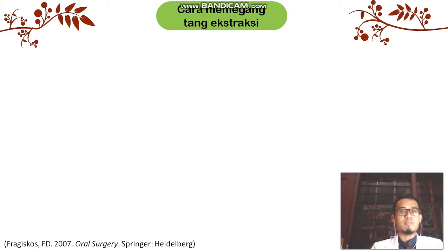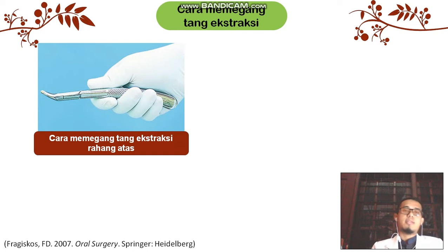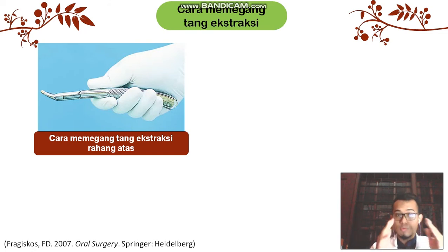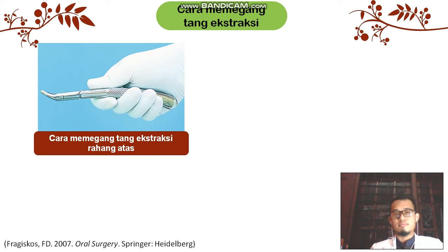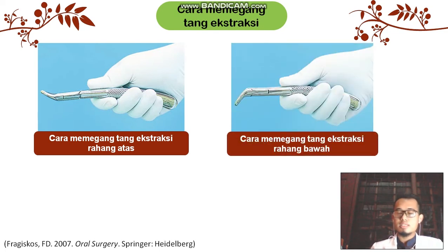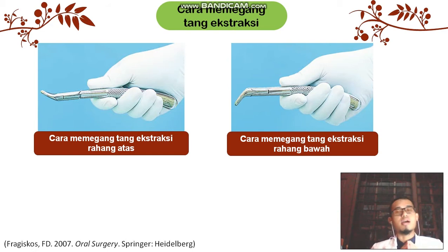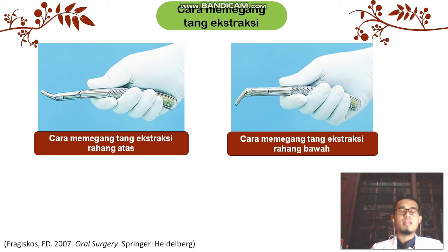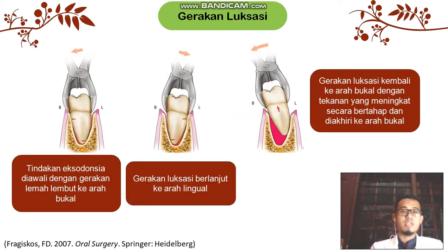Cara memegang tang ekstraksi menjadi sangat penting untuk mencapai ergonomis pada lengan. Cara memegang tang ekstraksi rahang atas adalah pump up, dengan posisi ibu jari di antara kedua lengan tang, sementara jari-jari lainnya memegang di salah satu sisi lengan tang ekstraksi. Pada rahang bawah, ibu jari berada di antara kedua lengan tang ekstraksi namun posisinya adalah pump down. Ibu jari diletakkan di antara kedua lengan agar tercipta kontrol tekanan yang kita aplikasikan kepada gigi, sehingga akan mencegah terjadinya fraktur dari mahkota gigi.